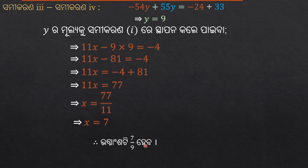So x equals 7 and y equals 9. Let us verify: 7 plus 3 divided by 9 plus 3 equals 10 divided by 12, which simplifies to 5 by 6. The answer checks out — 5 by 6 confirmed.